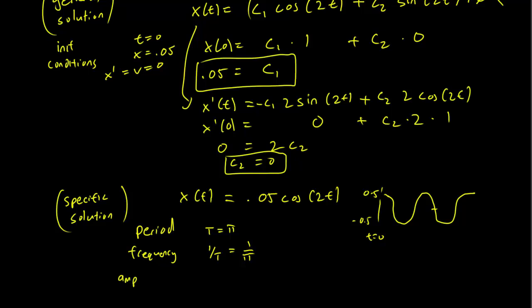Our amplitude is the amount where the mass goes away from the middle point, and it's just going to be 0.05. This is just going to be the constant in front of the cosine. It's going to be 0.05 meters. And that's going to be the answer to our problem.